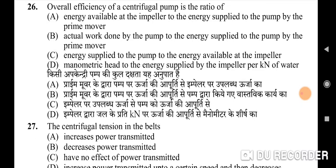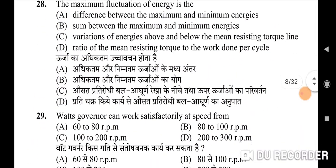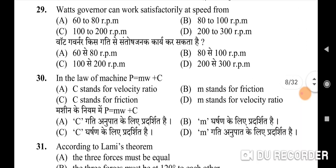Twenty-seventh question: the centrifugal tension in belts — correct option is C: it has no effect on power transmitted. Twenty-eighth question: the maximum fluctuation of energy is — correct option is A: the difference between the maximum and minimum energies. Twenty-ninth question: Watt's governor can work satisfactorily at speeds from — correct option is A: 60 to 80.